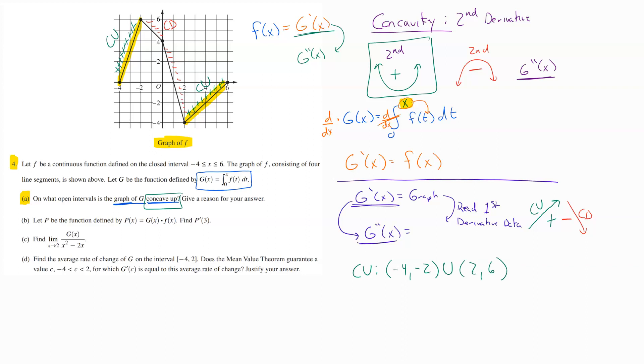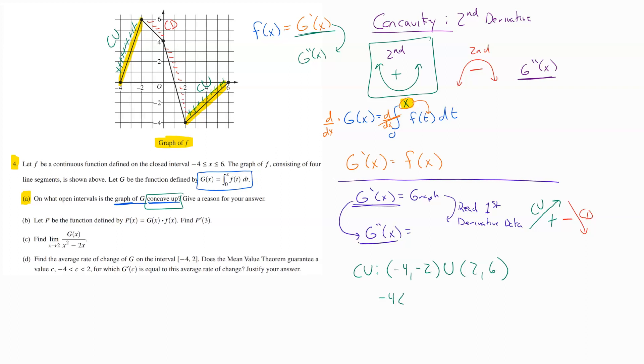So that's using interval notation to describe what the interval would look like. You could also have written your answer as x is greater than negative 4, less than negative 2, and then a comma. And you could say x is greater than 2 and less than 6. But either one of those would have been what they're looking for here.